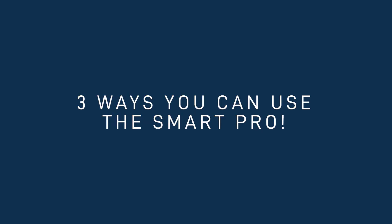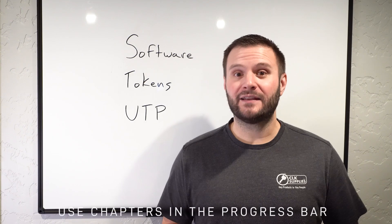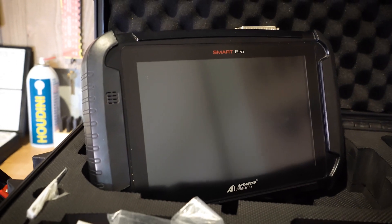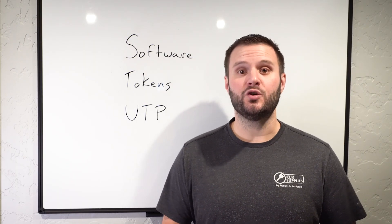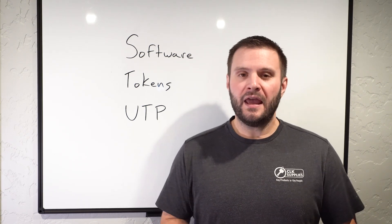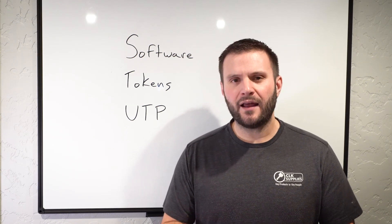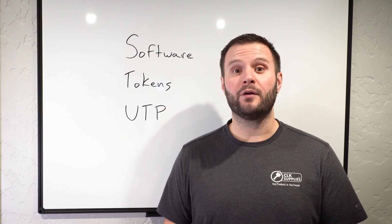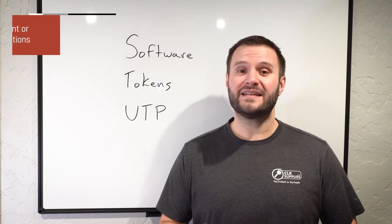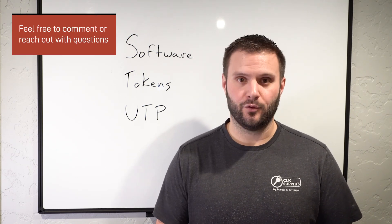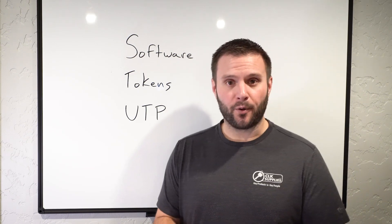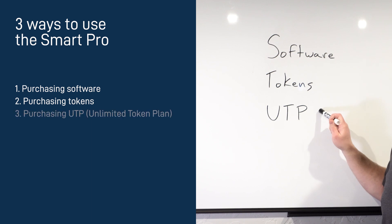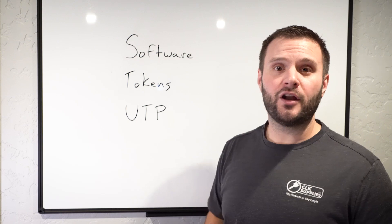I'm going to be going over the three main ways that you can use the Smart Pro — there's actually four, and I'll be covering that at the very end. What I'm not going to be talking about is ways that you can purchase the machine, because over the past few years there have been all sorts of different options to buy or trade in for the Smart Pro. Feel free to ask questions in the comments below, or send us an email or give us a call and we can go over current pricing. The three ways are: purchasing software, purchasing tokens, or purchasing something called a UTP.